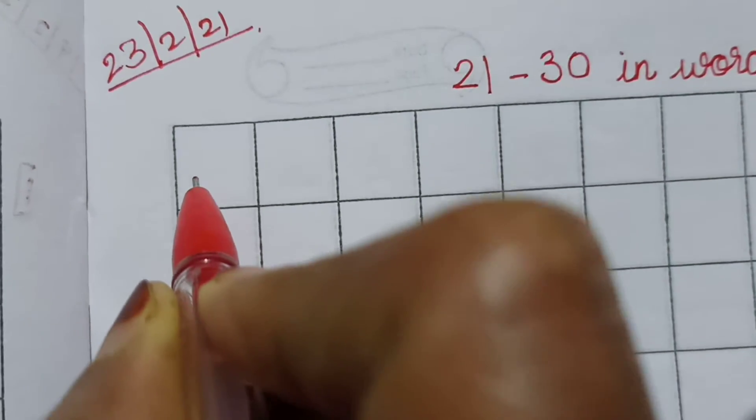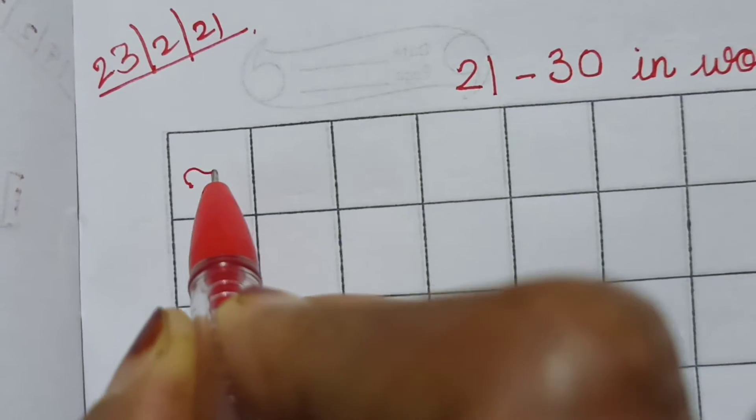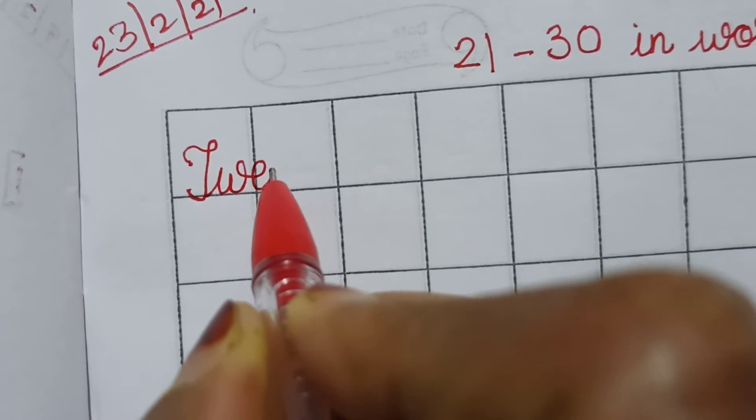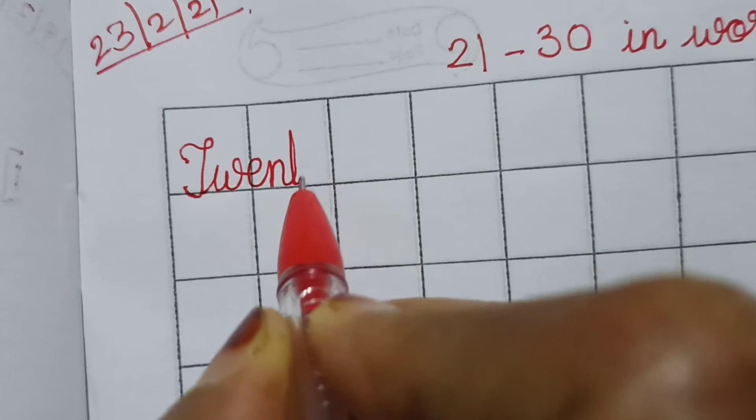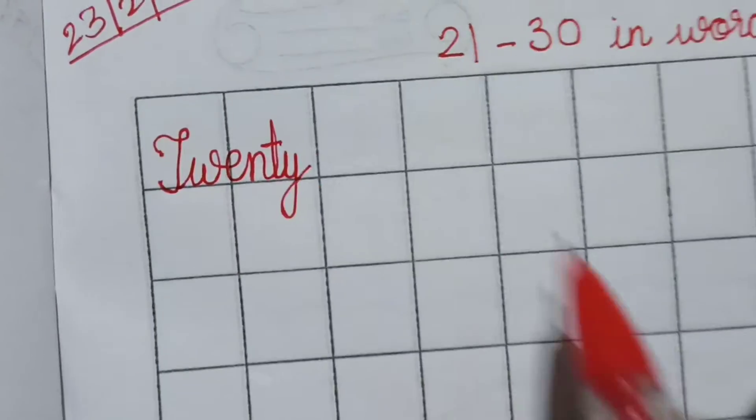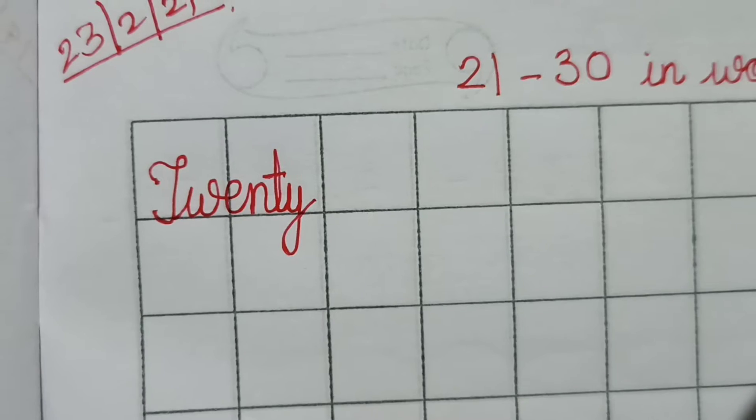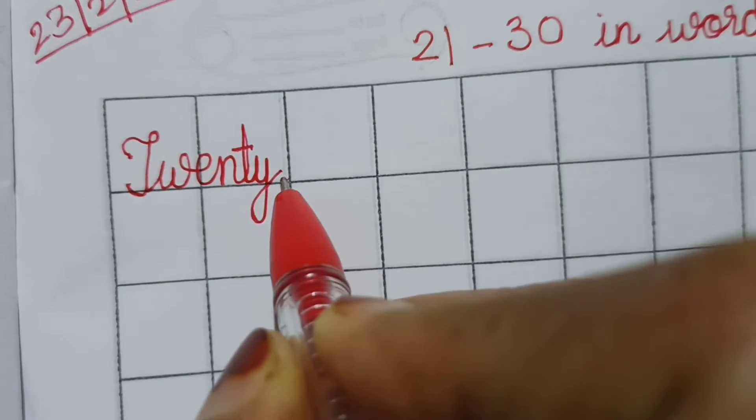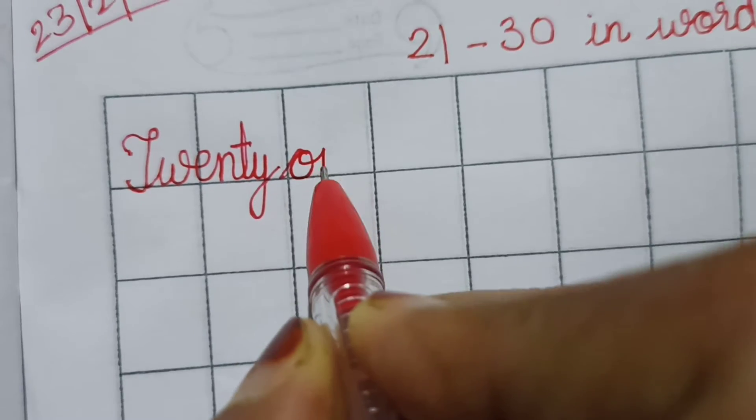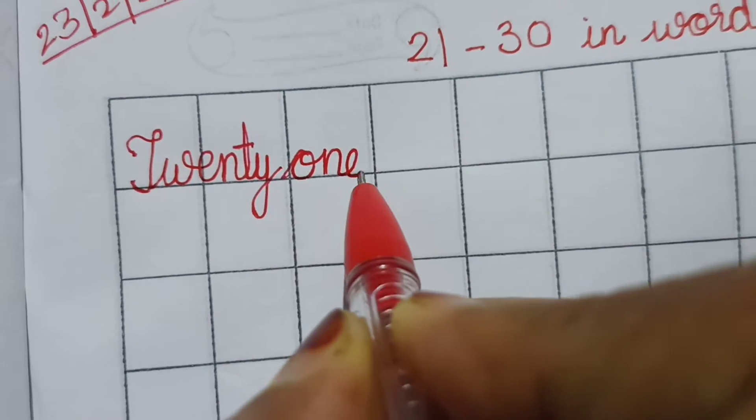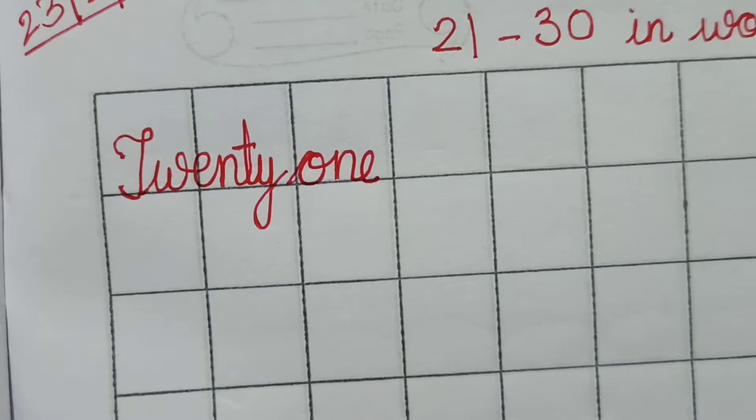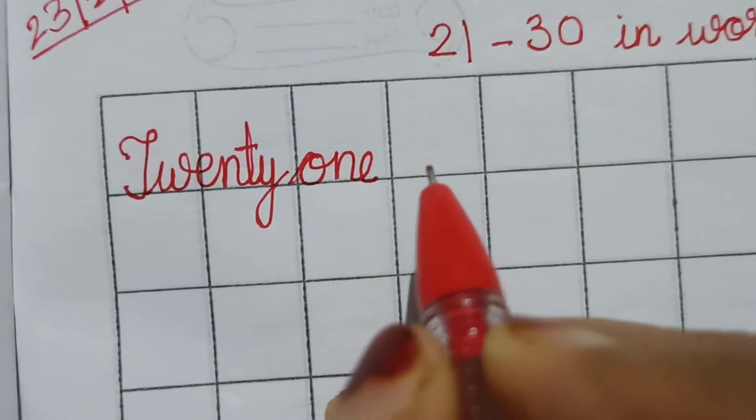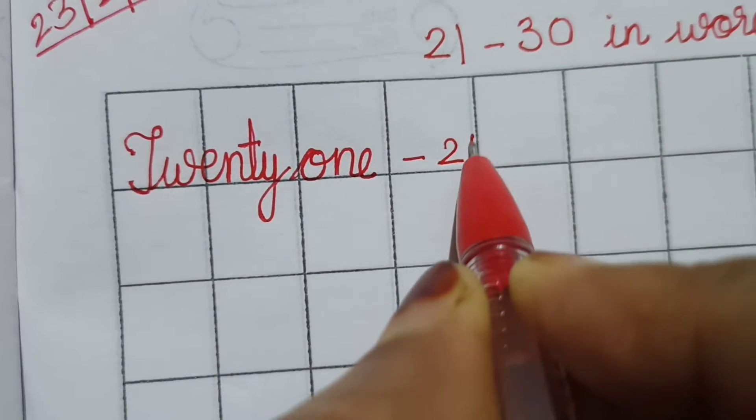First we will write the spelling 20: T-W-E-N-T-Y. This is the spelling of 20. Now we are going to write the spelling of 1. Already you have learnt O-N-E. It is very easy children. 21. So what spelling is this? 21. We will write in numbers: 21.